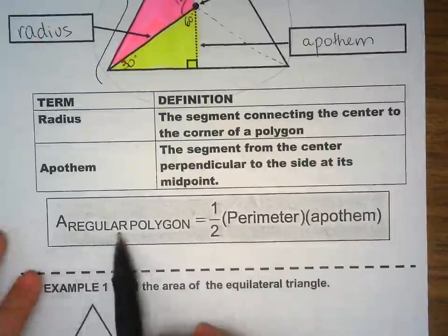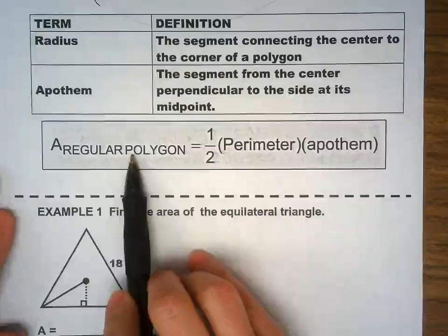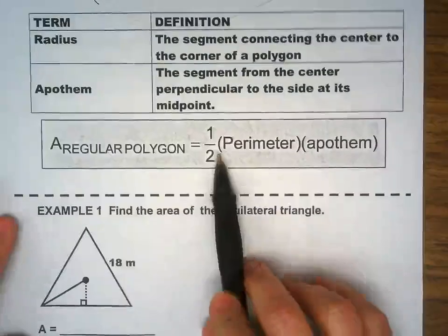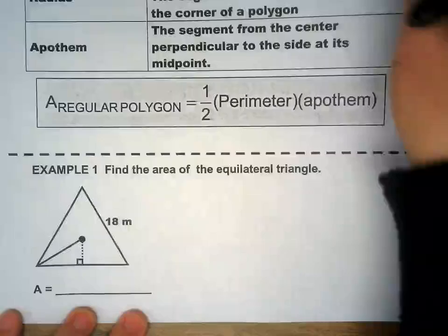And this is the formula to find the area of any polygon. It's perimeter times the apothem divided by two, or half the perimeter times the apothem.